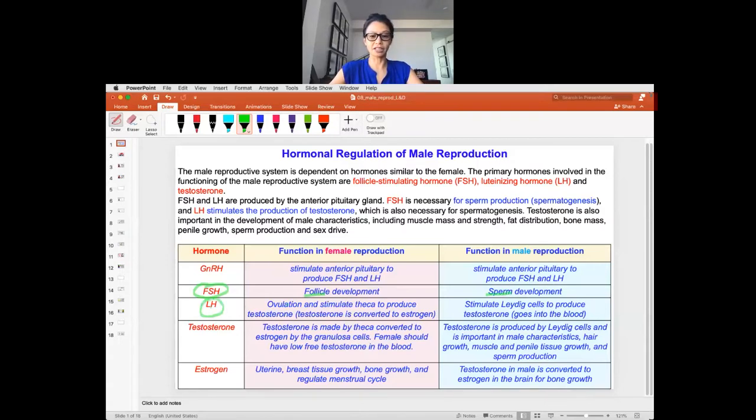LH in male and female is actually very similar. They're important for the production of testosterone. In the female, it's in the theca, and in the male, this is done in the Leydig cells. But in the male, the testosterone does go into the blood and allow for male development. In female, the testosterone is converted to estrogen. So I want you to kind of think about what each pathway is doing, so that's going to help you understand the difference between male and female.